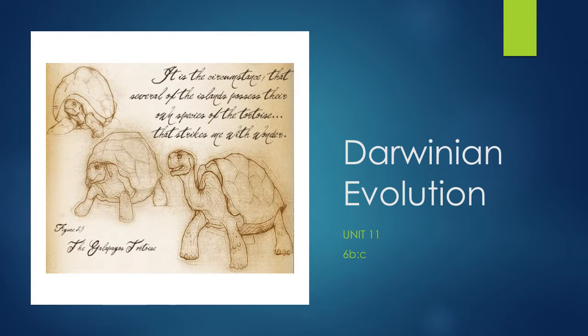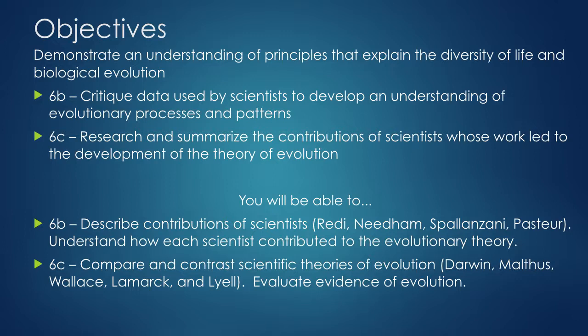This slideshow will cover Darwinian evolution — Unit 11. Objectives 6B and 6C are covered here. 6B is to describe the contributions of different scientists to evolutionary theory, and we're going to look at the scientific theories that contributed to Darwin's theory of evolution.